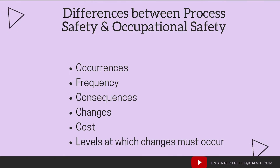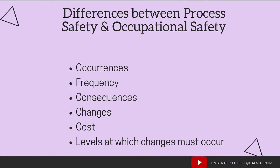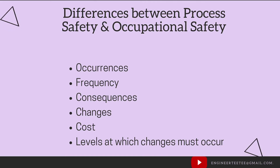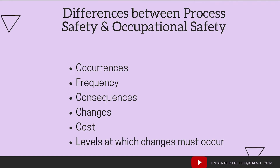Process safety is generally more expensive to implement and is often misunderstood. It addresses major hazards that are more likely to occur in major incidents with big consequences. Occupational safety addresses incidents involving personal safety at an individual level with generally lower consequences. Process safety deals with mitigating large-scale events such as fires, explosions, and pollution, whilst occupational safety mitigates incidents at an individual level such as cuts and broken bones.